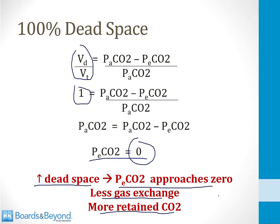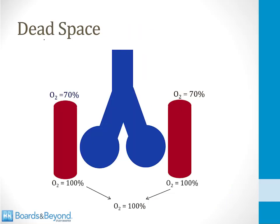The more dead space you have, the higher your CO2 will become unless you can increase your ventilation rate to blow it off. Now, what about dead space and oxygen? Consider two working alveoli, each perfused by a pulmonary capillary. Blood enters at 70% oxygen saturation — typical venous saturation — and after passing through the alveoli, is fully saturated at 100% on both sides.